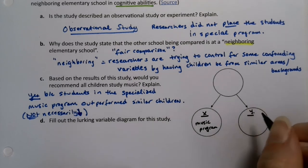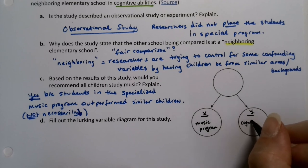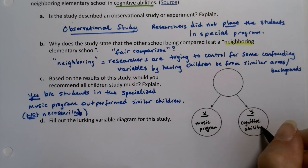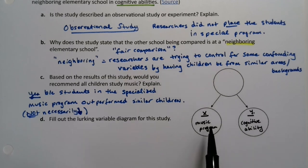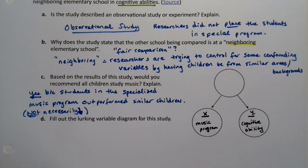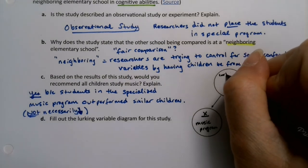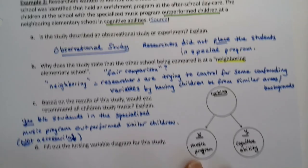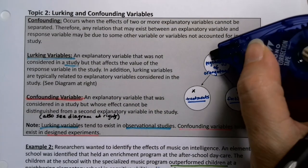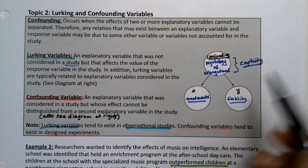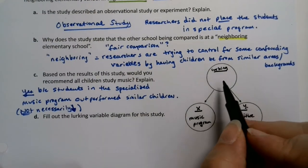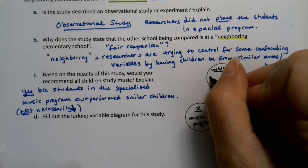So another variable — a lurking variable, or in this case a confounding variable because the orangutan example was an experiment, whereas this one is a study — that lurking variable would be the socioeconomic background of the parents. If they have enough money and wherewithal to send their kids to the special music program, their socioeconomic and social and economic class matters. What's their money situation? What's their race or ethnicity that might affect it? What's their culture? Do they value music?